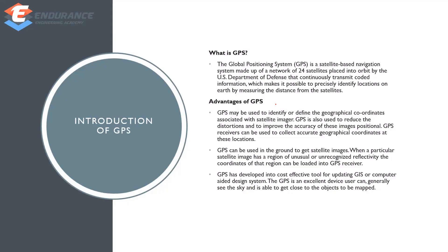Let's talk about GPS. GPS stands for Global Positioning System. It is a satellite-based navigation system. It consists of a total of 24 satellites in orbit, operated by the US Department of Defence, that continuously transmit coded information which makes it possible to precisely identify locations on Earth by measuring the distance from the satellites.